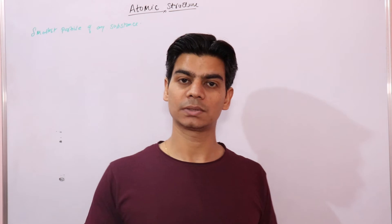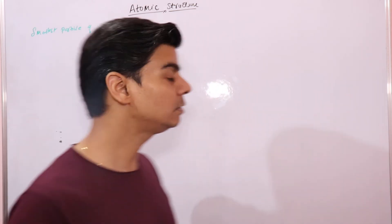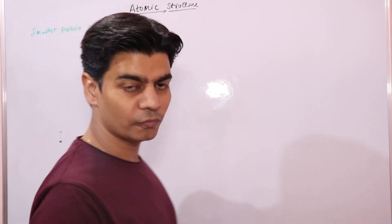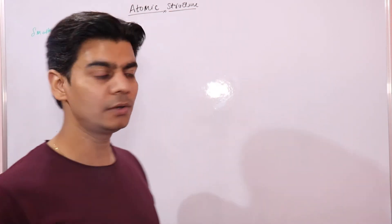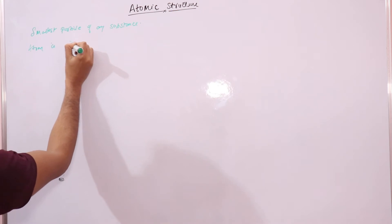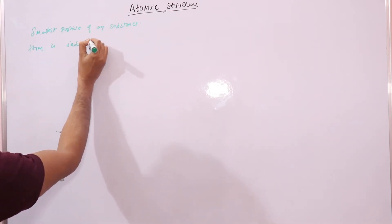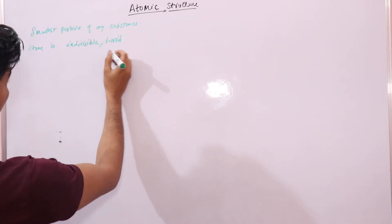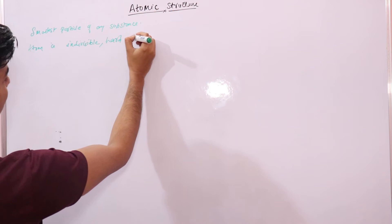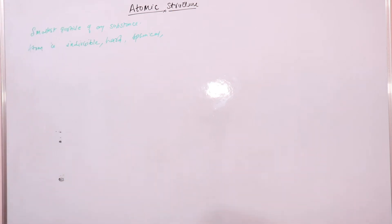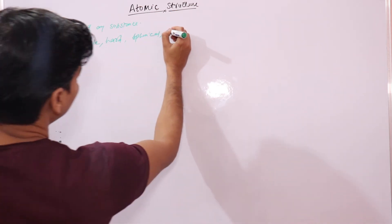The actual formal definition of atom was given by John Dalton in his Atomic Theory. He stated that an atom is the smallest particle of an element which cannot be further subdivided — it is indivisible. He also said that the atom is hard and spherical in shape.